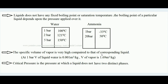So the specific volume of vapor is very high compared to its liquid form. The third thing to keep in mind is critical pressure — the pressure at which a liquid does not have two distinct phases. It is the maximum pressure beyond which a liquid cannot be transformed into vapor, meaning the two phases merge with each other. For water, the critical pressure is 225 bar.